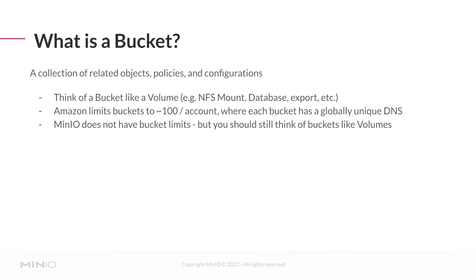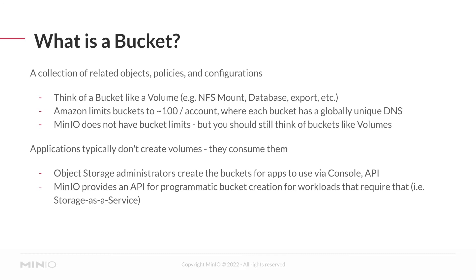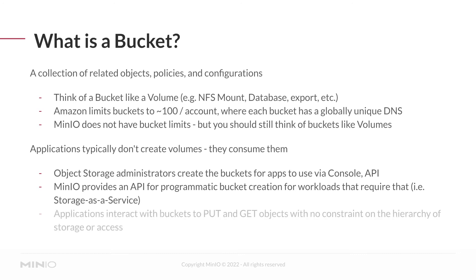From the S3 world, there's a limit of around 100 buckets per account, and each bucket has a globally unique DNS name. MinIO doesn't have those kinds of bucket limits because you're deploying onto whatever infrastructure you want — no constraint around DNS names per bucket or the number of buckets MinIO can host. That said, it's still a good idea to think of a bucket like a volume: having hundreds or thousands of buckets, just like hundreds of volume mounts, might indicate you need to reconsider how you're storing data. Object storage administrators create buckets for apps to use, configuring them and setting up access policies via the graphical console, the MinIO CLI, or the MinIO S3 API. Applications interact with buckets to put and get objects — the equivalent of writing and reading — with no real constraint on storage hierarchy.